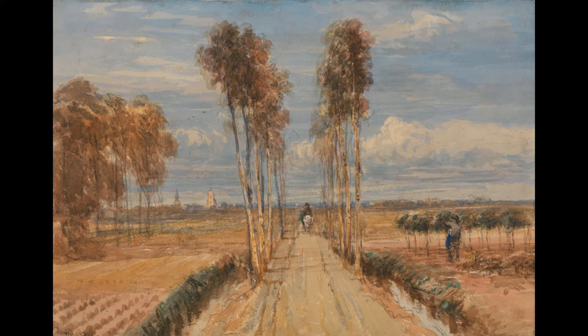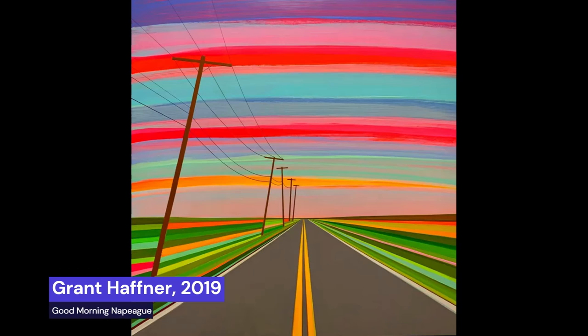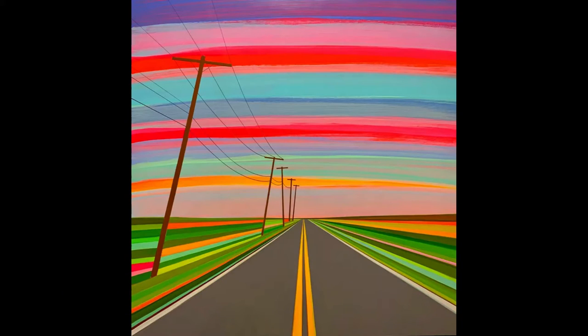We're going to jump ahead about 200 years now. This artist, Grant Hafner, is a contemporary artist who is producing artwork currently, and he does these amazing perspective drawings of kind of what we saw in the first photograph of roads, of things that you might be going by. He creates this idea of movement inside his artwork as well.